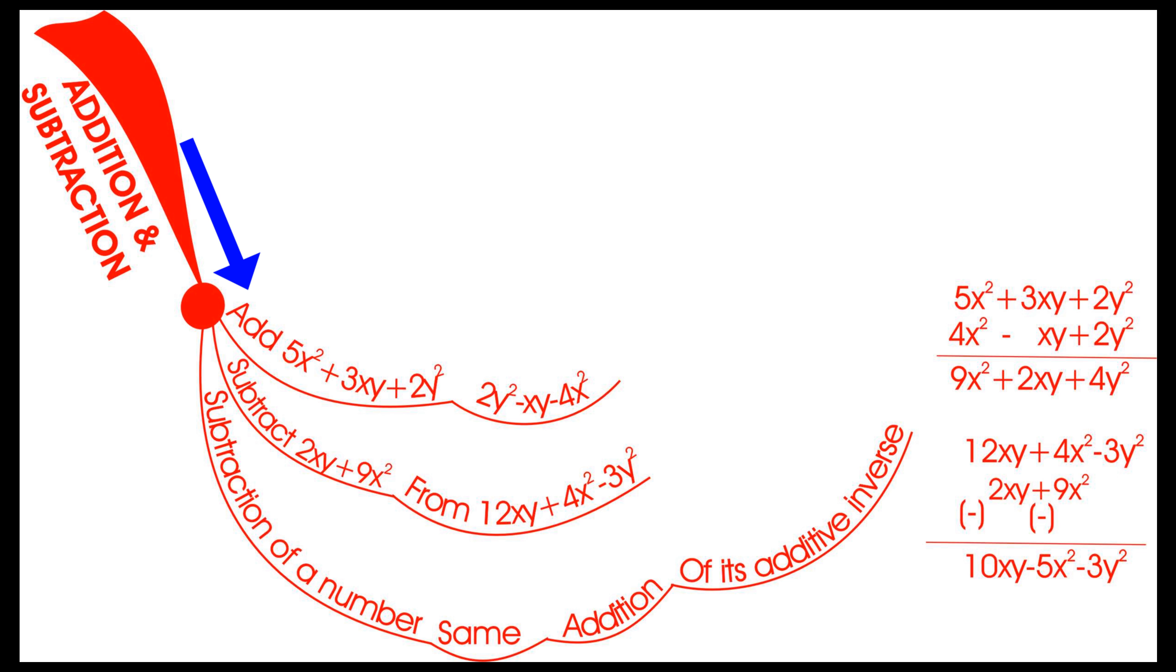Add 5x² + 3xy + 2y² and 2y² - xy + 4x². Write the expressions one under another so that like terms align in columns. Then add. After adding we got 9x² + 2xy + 4y².